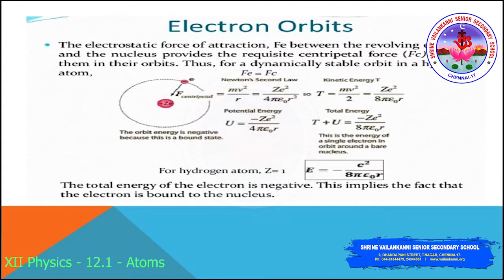The kinetic energy value is T = Ze² / (4πε₀R). The potential energy U equals −Ze² / (4πε₀R). The negative sign indicates that the electrostatic force acts in the negative R direction — that is, opposite to the direction of displacement.